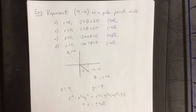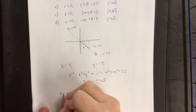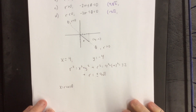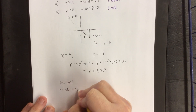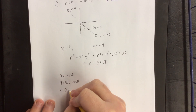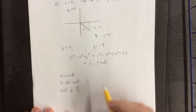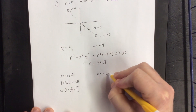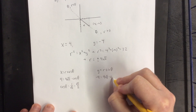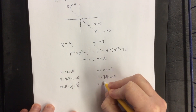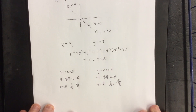Another handy bit of information to know would be the sine and cosine of this angle. We know that x is equal to r times the cosine of theta. Since x is 4 and r is 4 square roots of 2, dividing both sides gives us cosine of theta equal to 1 over the square root of 2, or root 2 over 2. Doing the same for y: negative 4 equals 4 square roots of 2 times sine of theta, so sine of theta equals negative 1 over the square root of 2, or negative root 2 over 2.